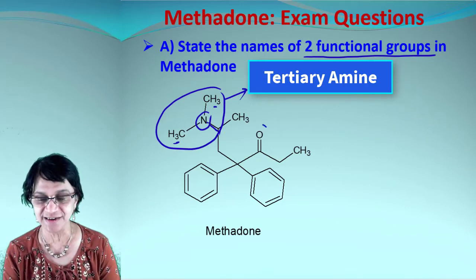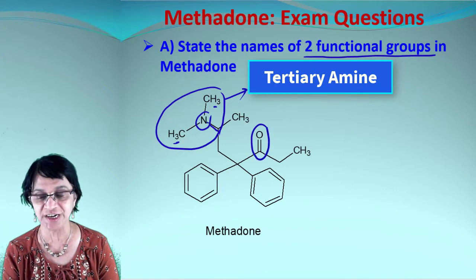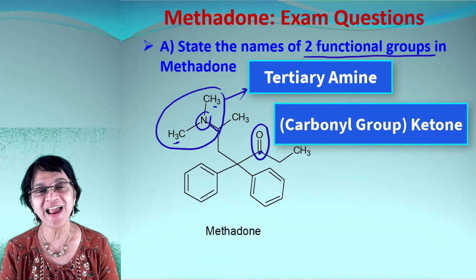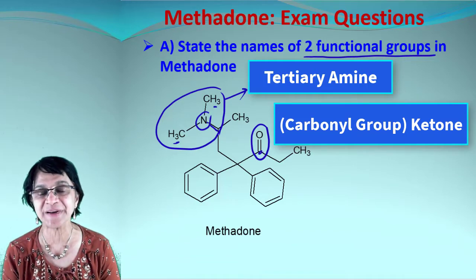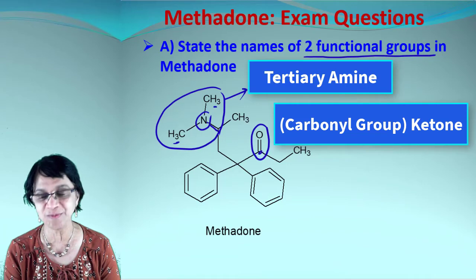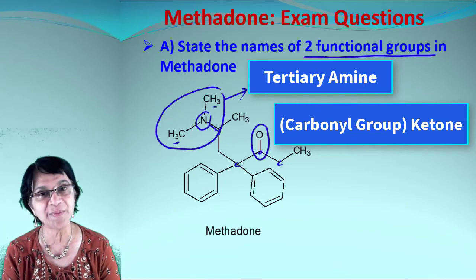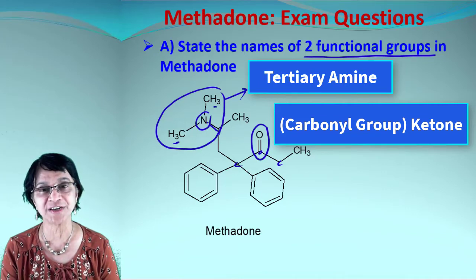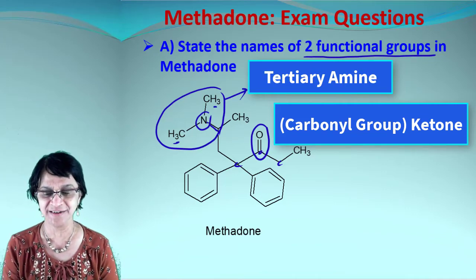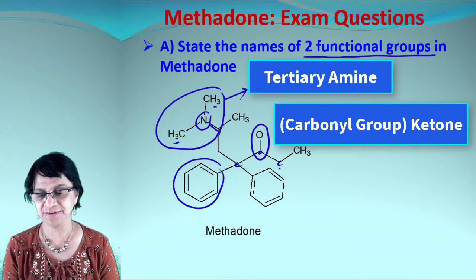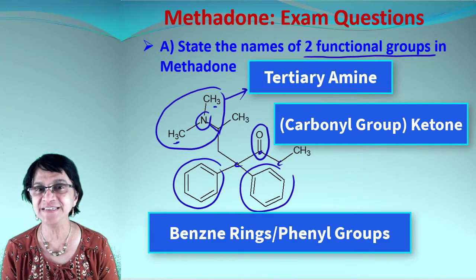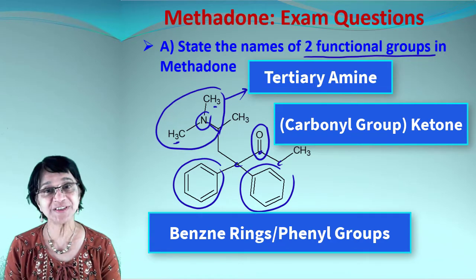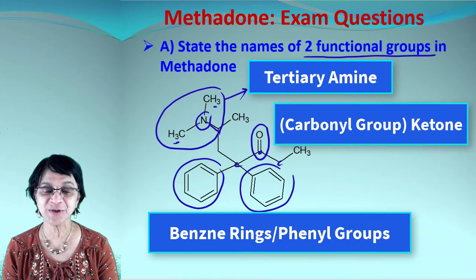For the second functional group, there's another heteroatom: an oxygen linked to a carbon, forming a carbonyl group. A carbonyl group flanked by two alkyl groups — one carbon on each side — is a ketone. Even though the question only asks for two, I can also see two rings, which are benzene rings, also called phenyl groups. So we have identified all the functional groups present in methadone.